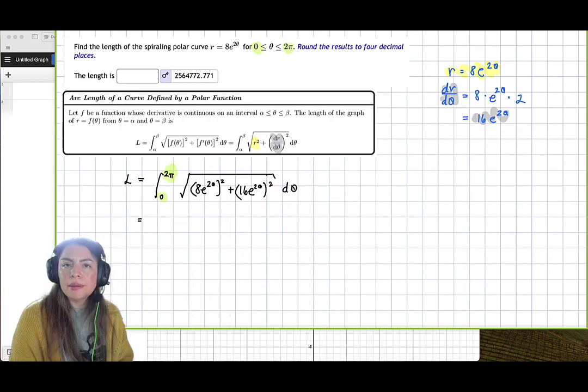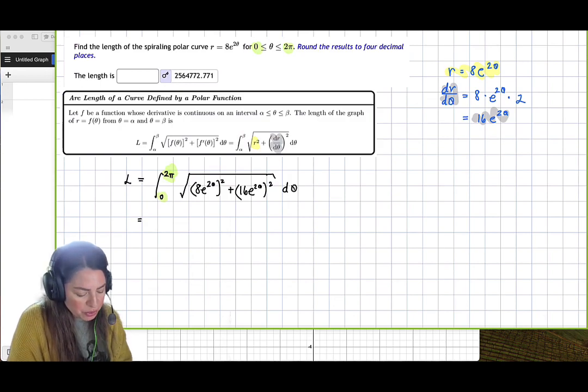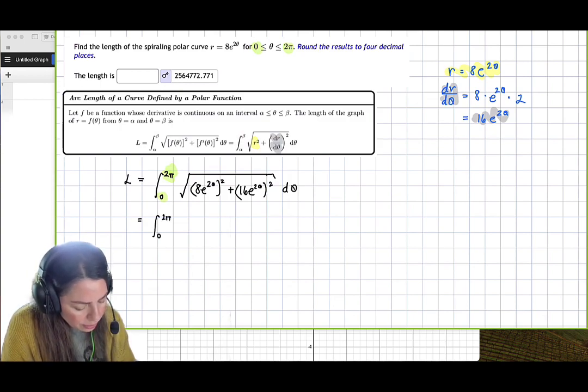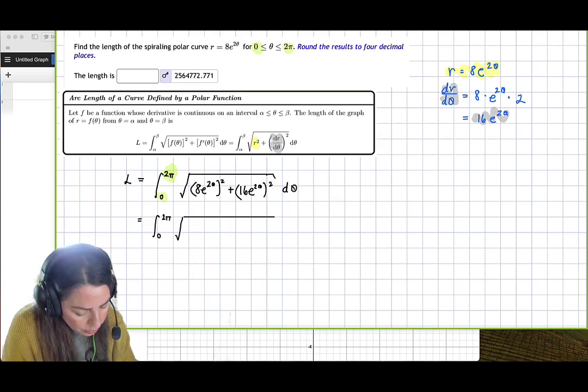And now it just becomes a definite integral as we've seen before. So we get 0 to 2 pi, square root of, and then d theta at the end.